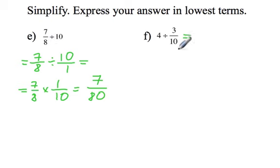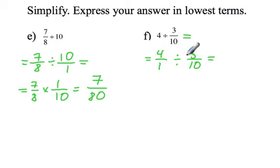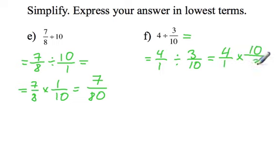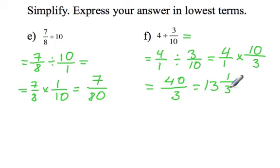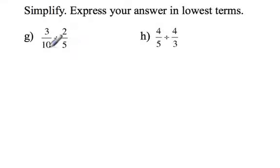For Question F we'll do the same thing: 4 over 1 divided by 3 over 10. To turn it into multiplication, the second fraction flips, so 4 over 1 times the reciprocal of 3 tenths is 10 thirds. That equals 4 times 10 is 40, and 1 times 3 is 3. 3 fits into 40 thirteen full times, and 13 times 3 is 39, leaving 1 third. The final answer is 13 and 1 third.